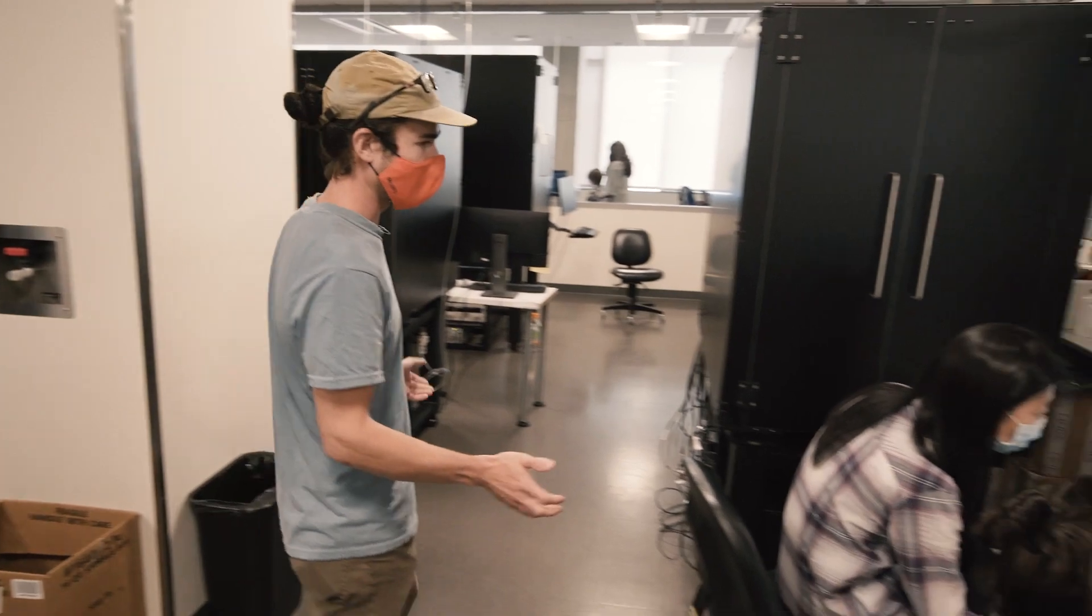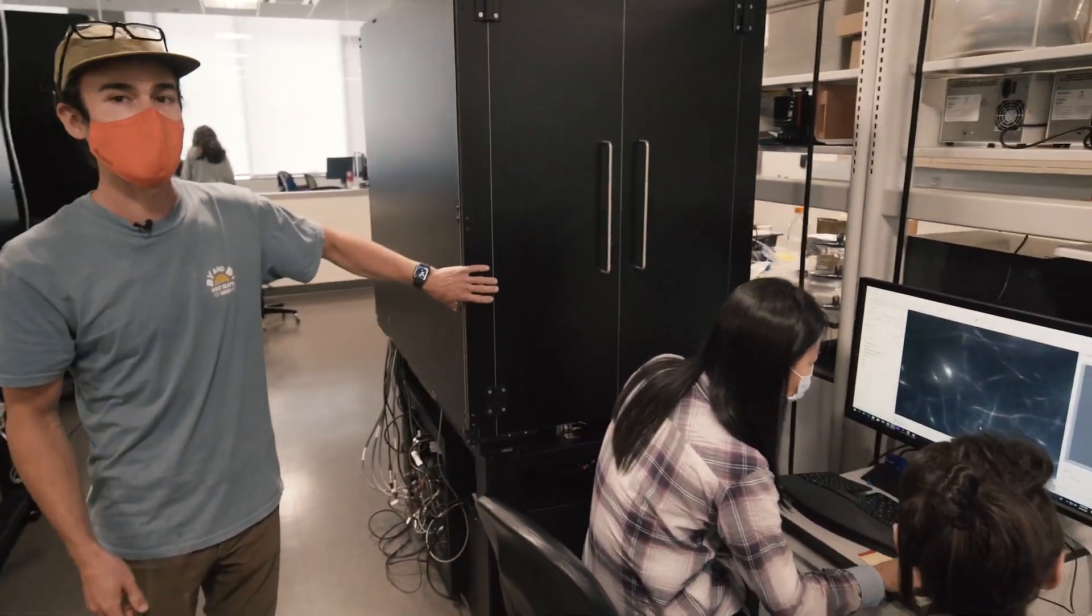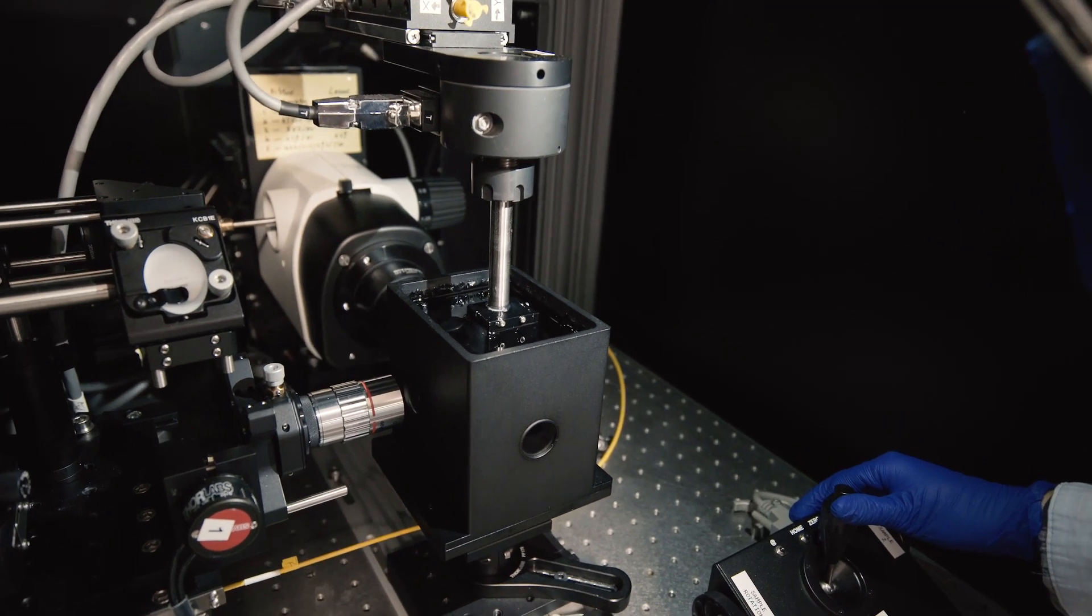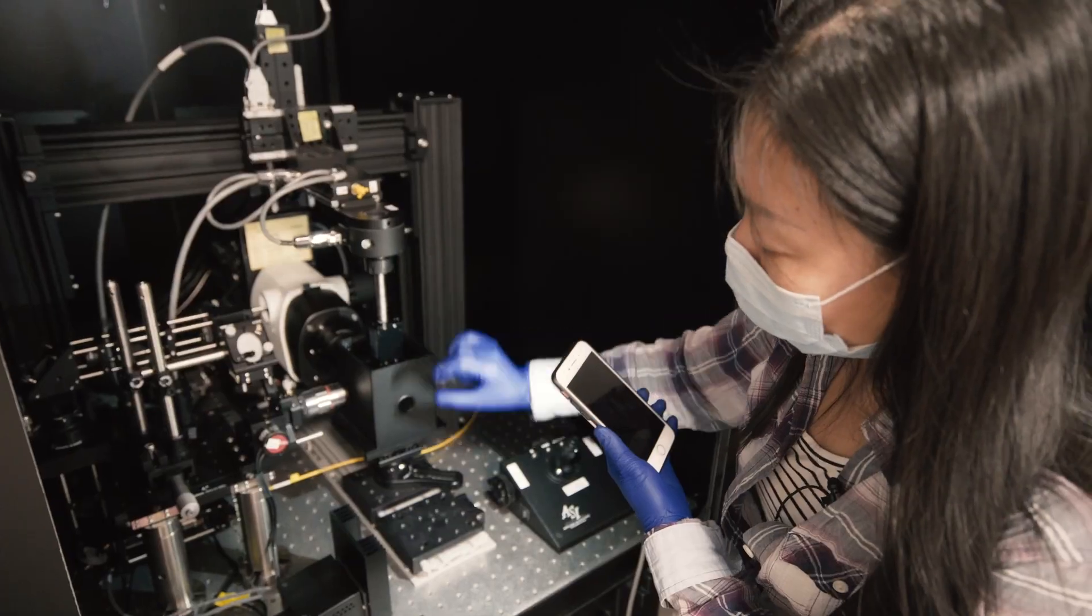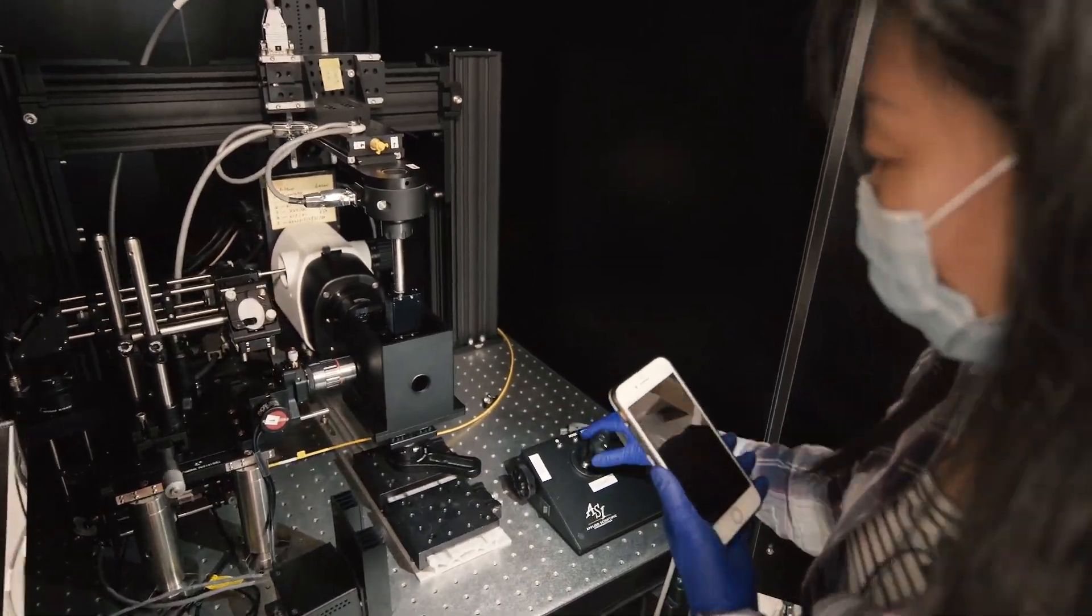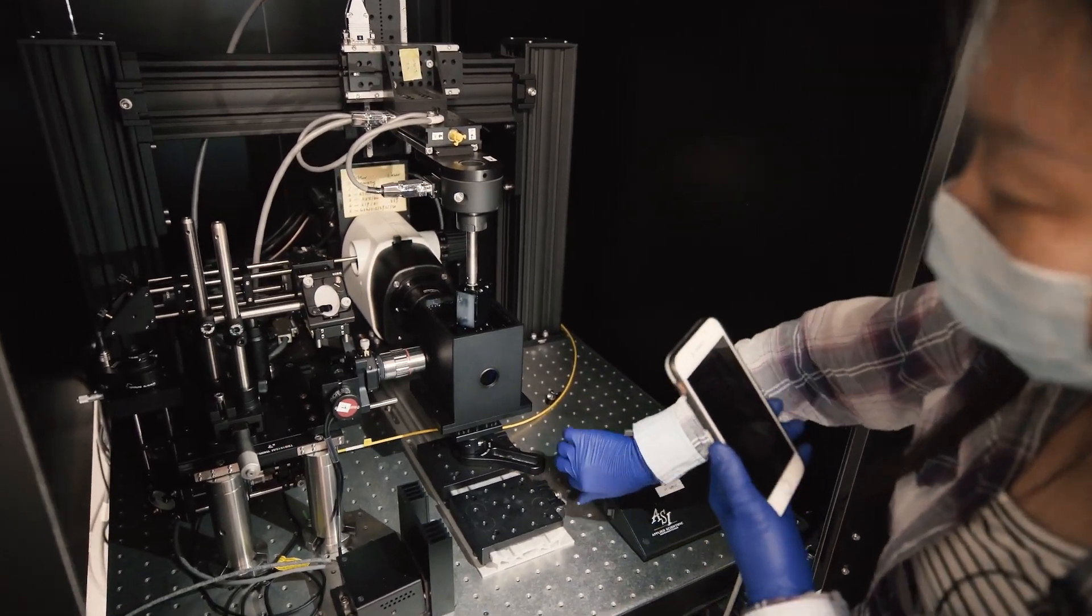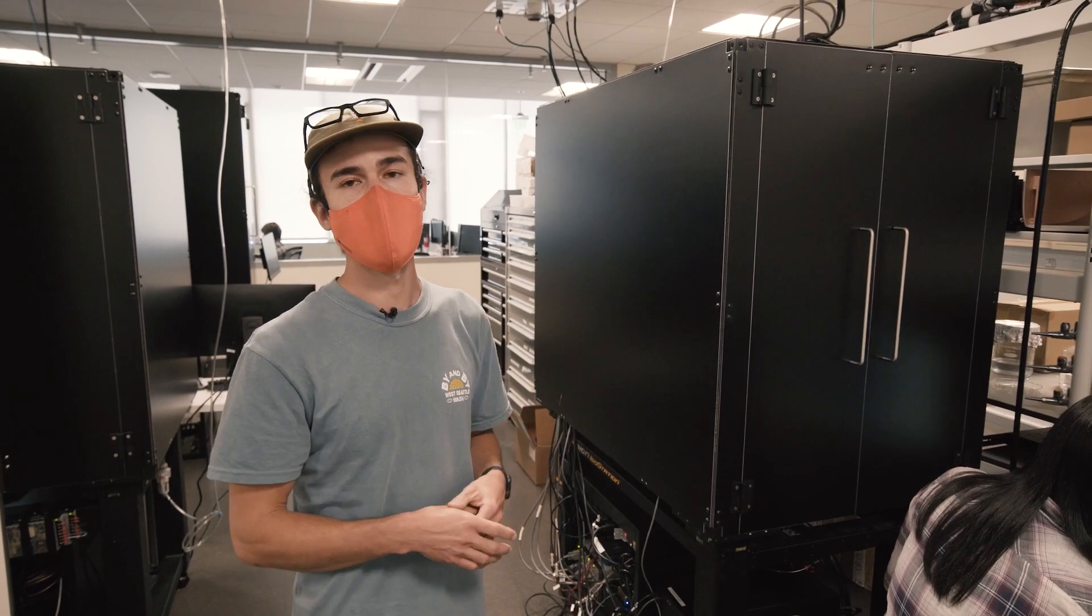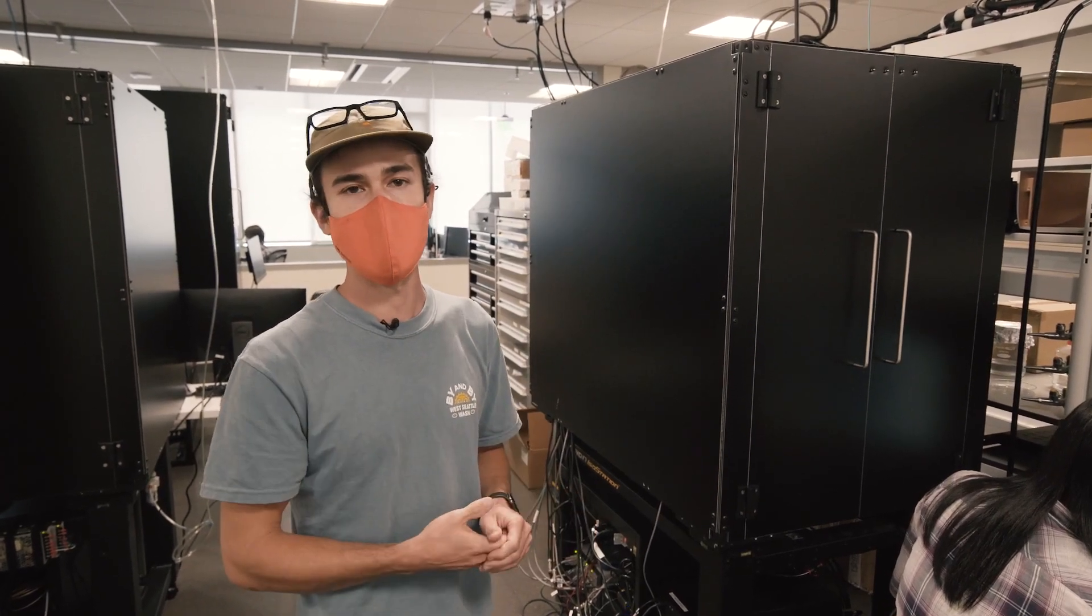Here we have a number of different microscopes. One of them here is called a mesospim which stands for a mesoscale selective plane illumination microscope, which is a mouthful but I think light sheet microscope makes a lot more sense. The way that the microscope works is you shine a sheet of light through the brain and then you take pictures of that sheet of light.